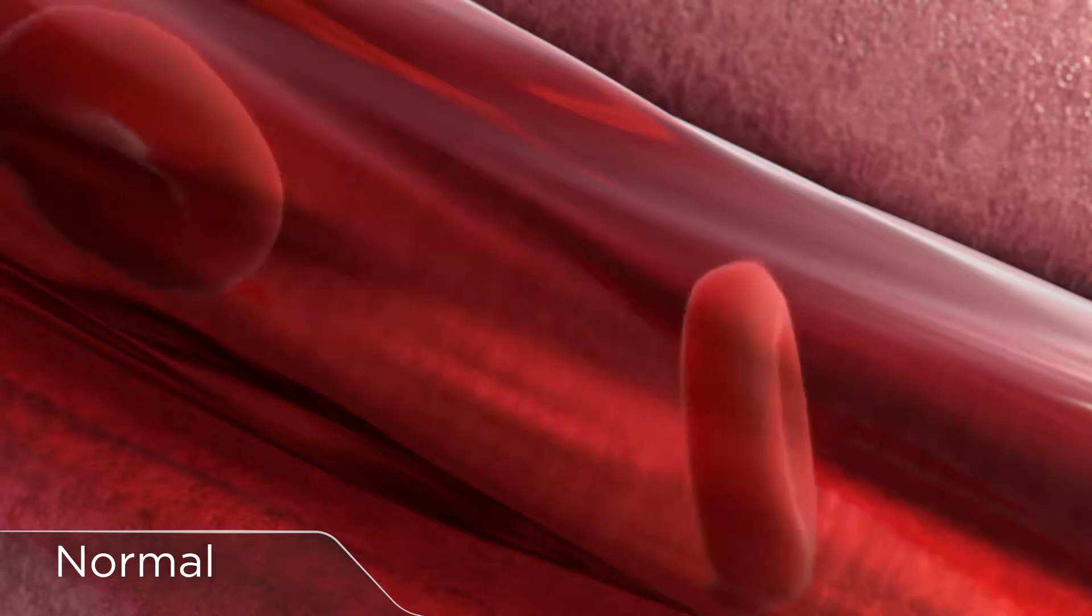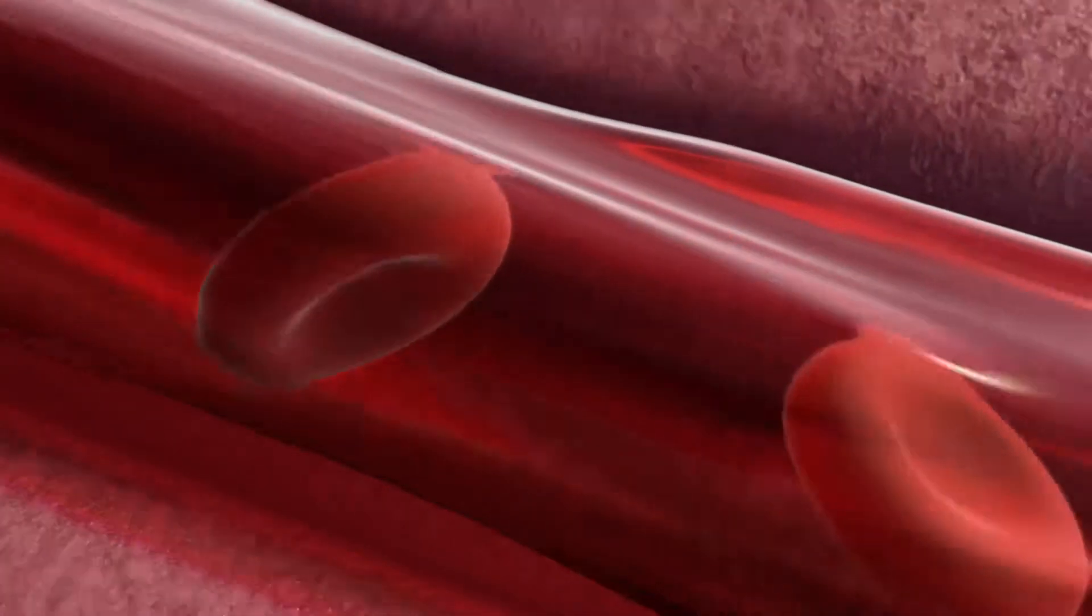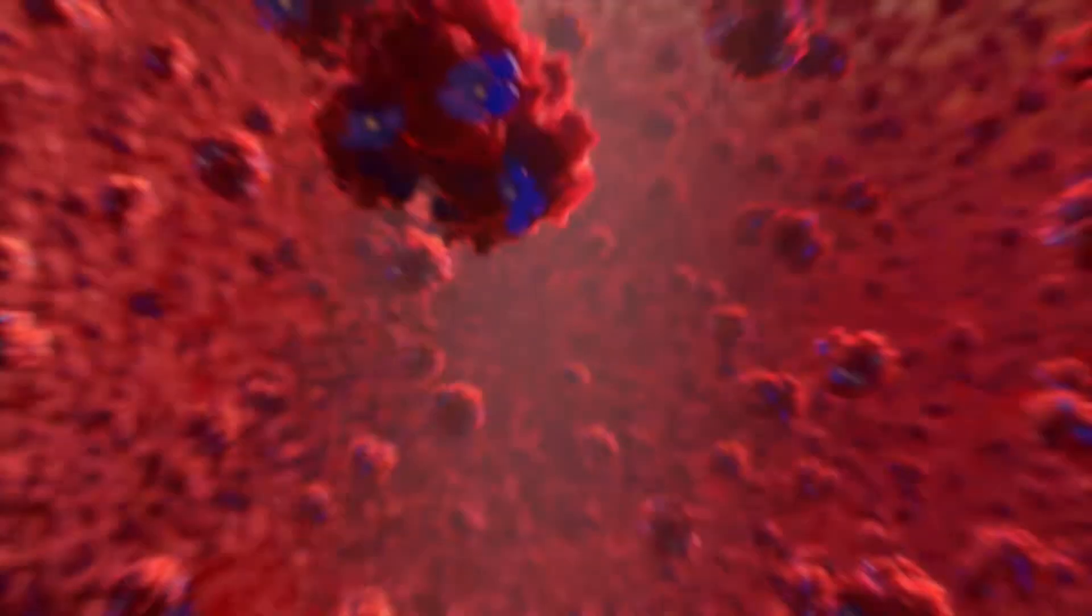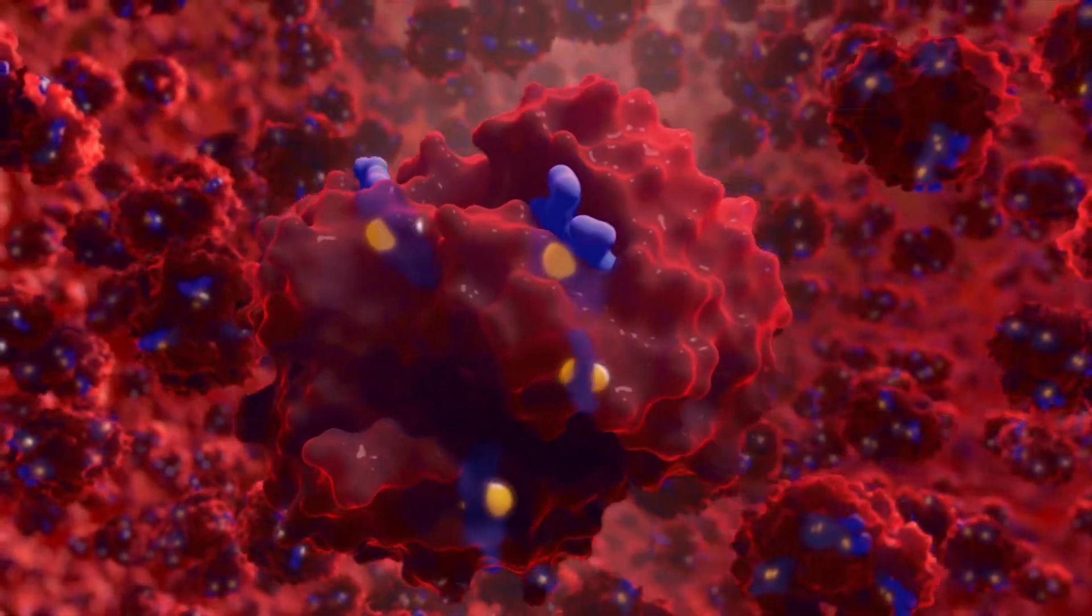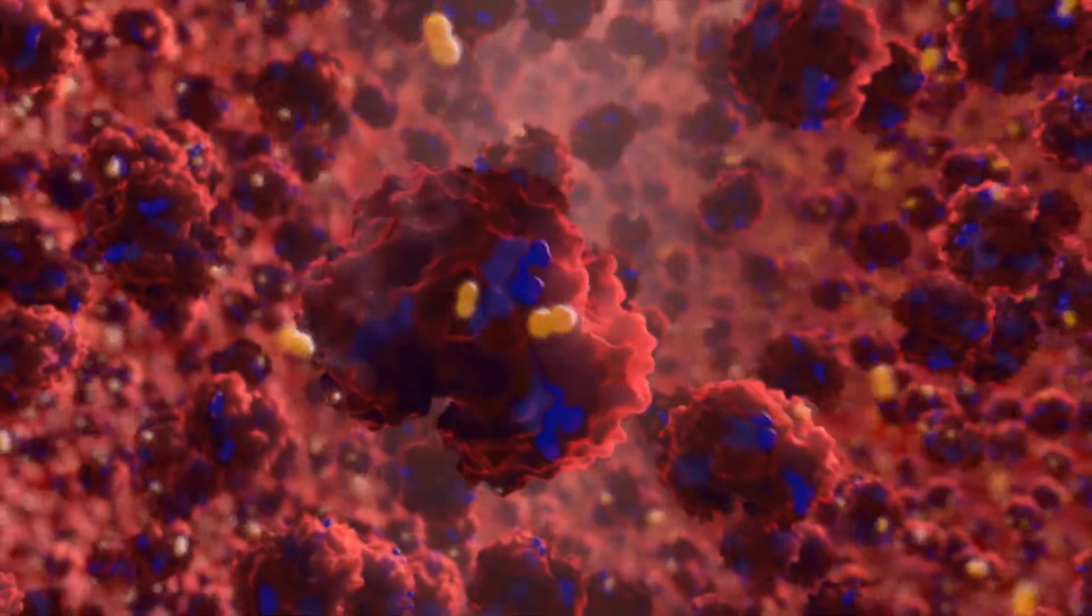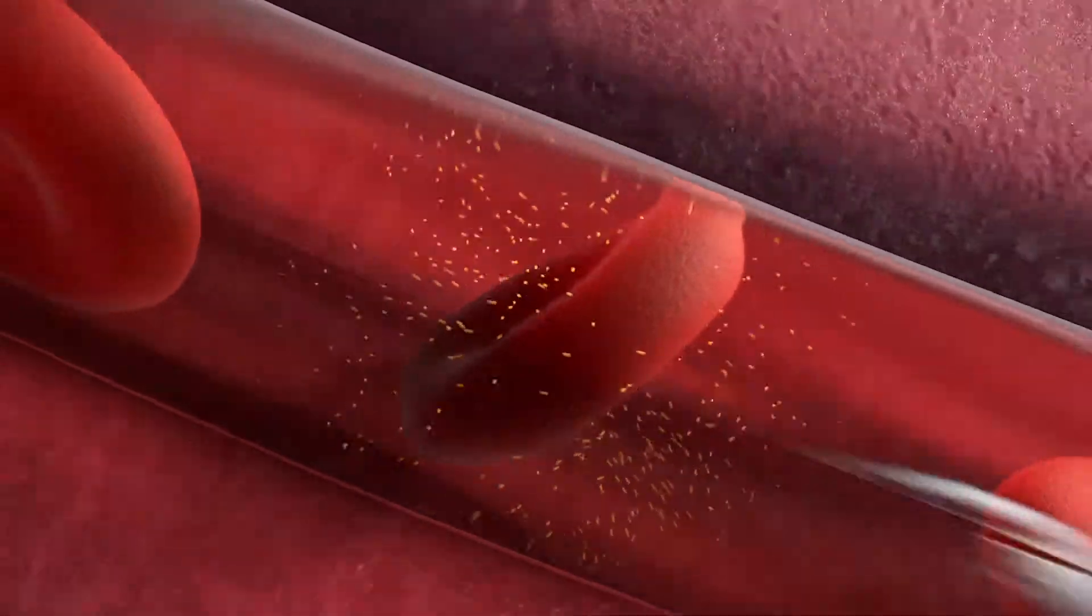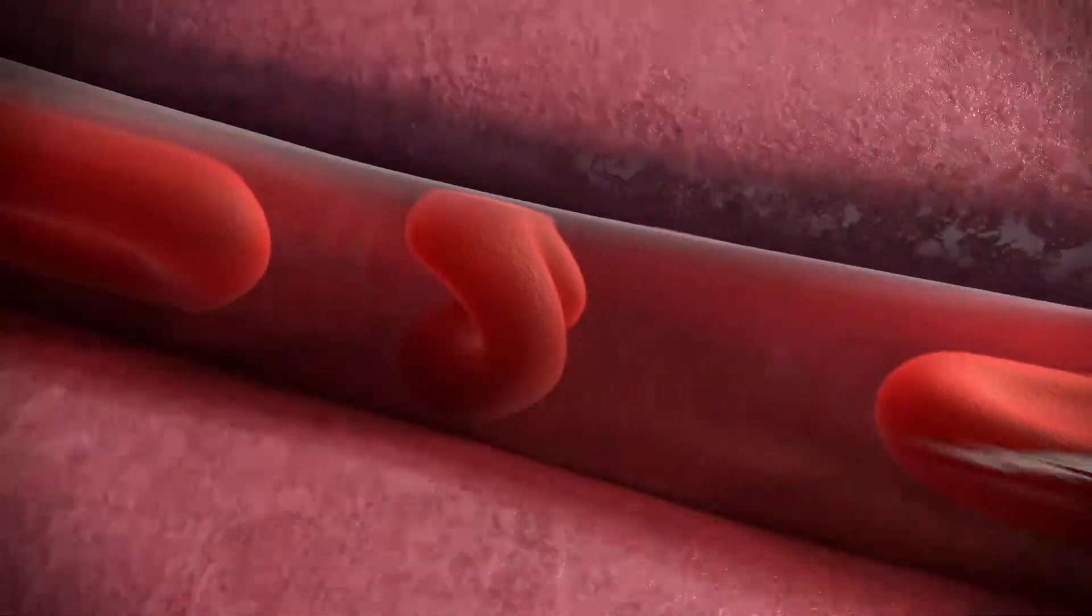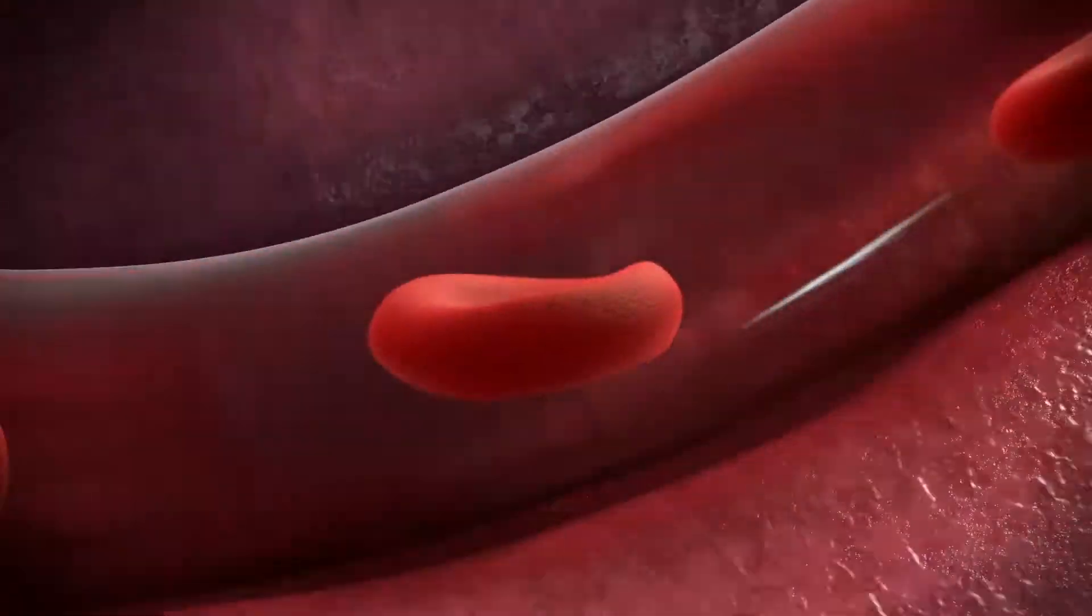In healthy individuals, red blood cells travel freely through blood vessels from the lungs to tissues and body organs. Hemoglobin, the oxygen-carrying molecule in red blood cells, loads oxygen in the lungs and releases oxygen to the tissues. This cycle repeats as the healthy red blood cells then return to the lungs, where the hemoglobin reloads oxygen to replace what has been delivered to the rest of the body.